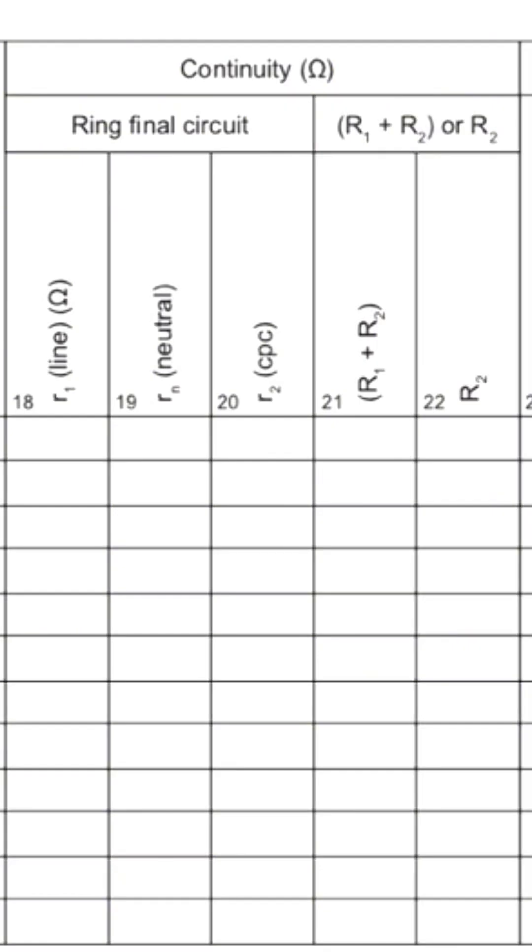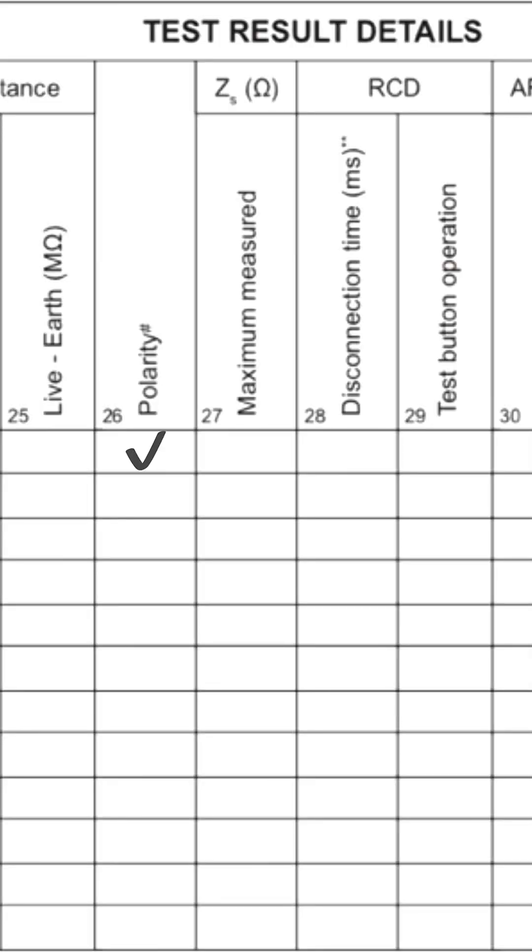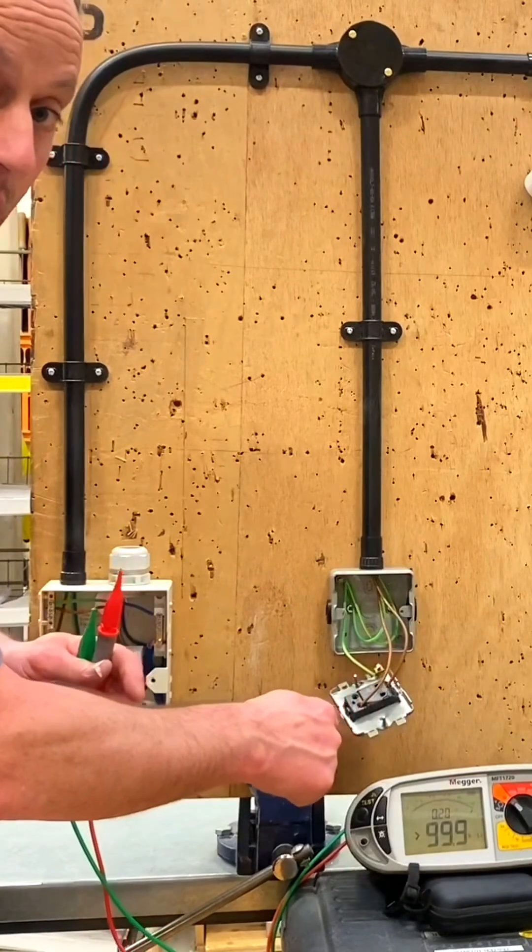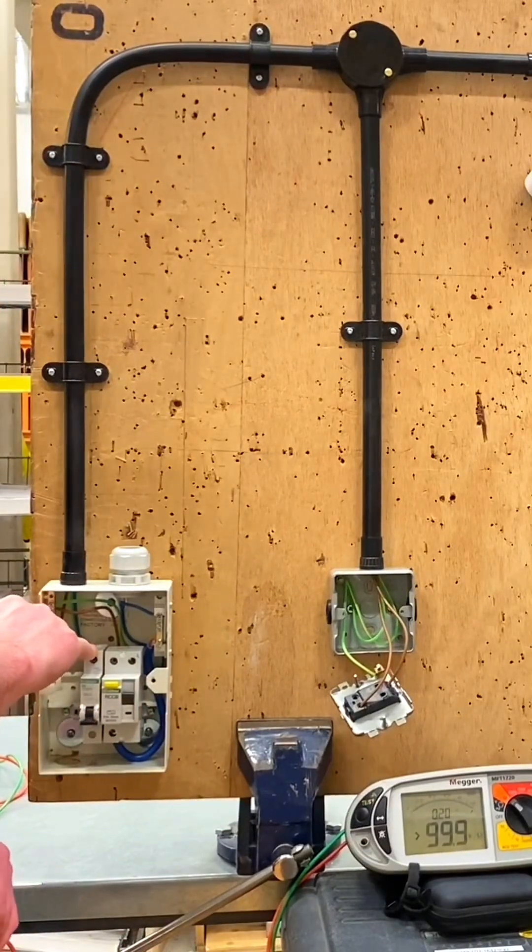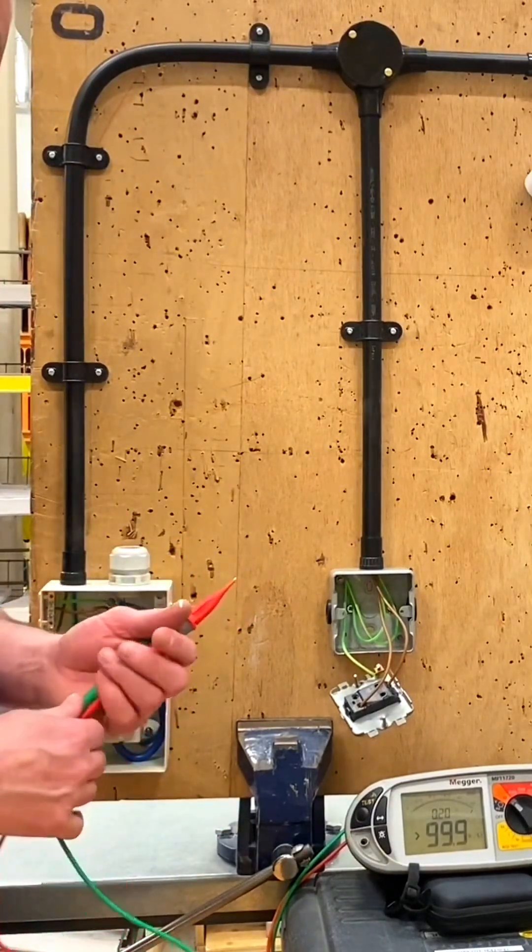Of all the readings we get, we record the highest one in the box heading R1 plus R2 under the continuity test. We can then tick the polarity box, proving that we switch and fuse in the line conductor. The switch was connected in the line conductor and we've got this brown conductor that would be in the fuse as part of our polarity test.